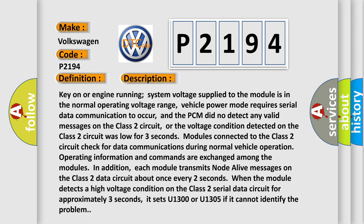Key on or engine running, system voltage supplied to the module is in the normal operating voltage range. Vehicle power mode requires serial data communication to occur, and the PCM did not detect any valid messages on the class 2 circuit, or the voltage condition detected on the class 2 circuit was low for 3 seconds.